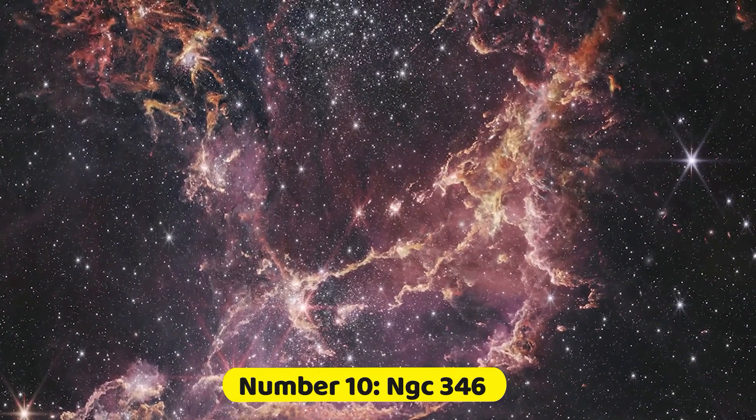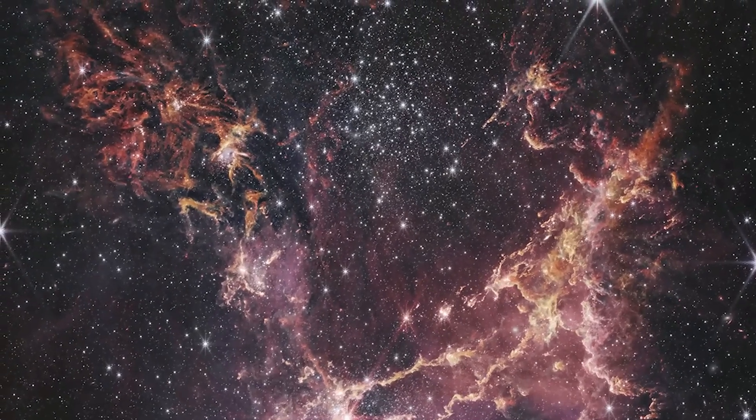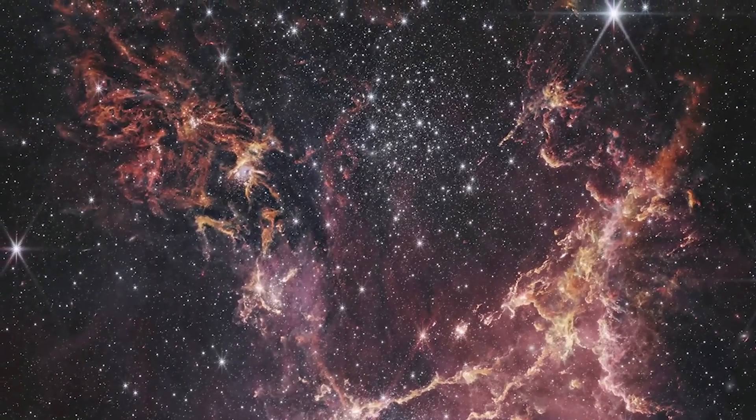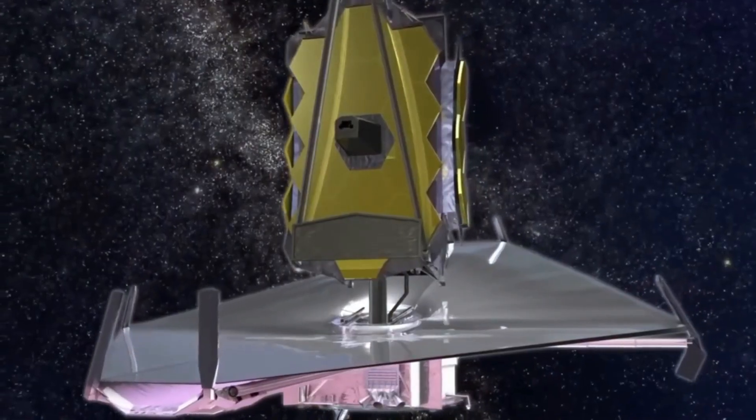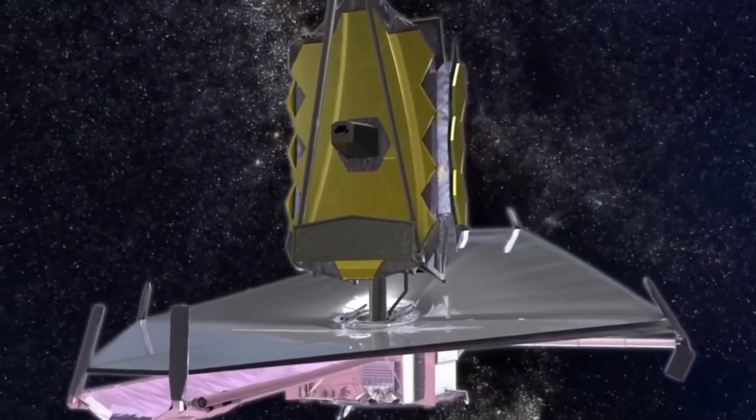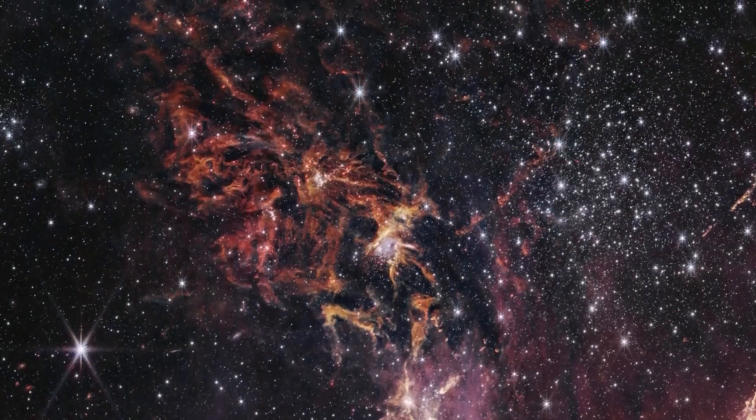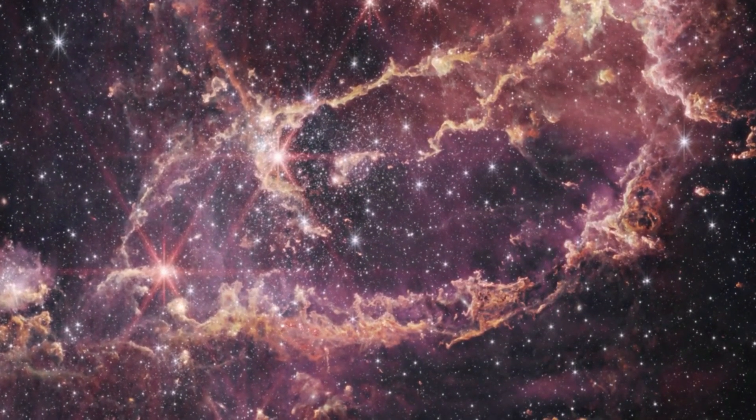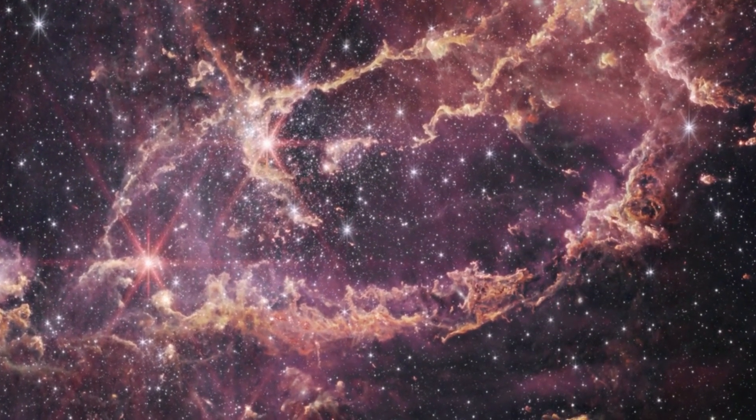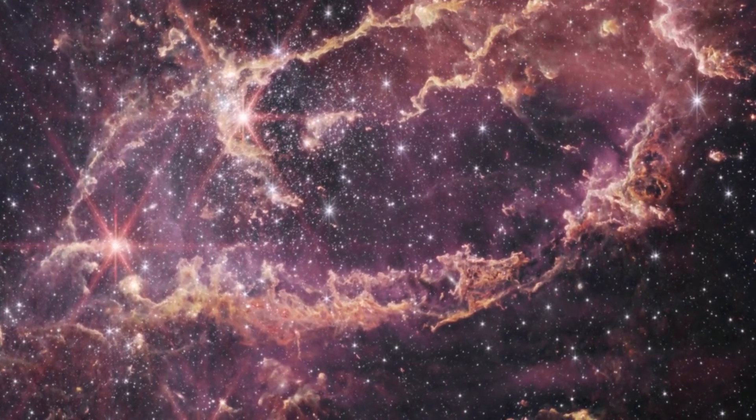Number 10. NGC 346. This stunning depiction of NGC 346 was captured by NASA's James Webb Space Telescope's infrared camera, specifically designed to observe in the near-infrared spectrum. Situated at a staggering distance of 200,000 light-years away, NGC 346 stands as a youthful star cluster nestled within a captivating nebula.